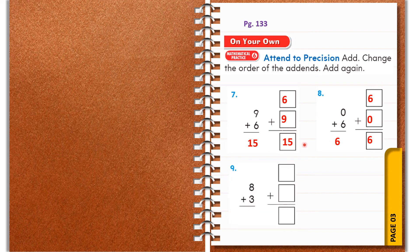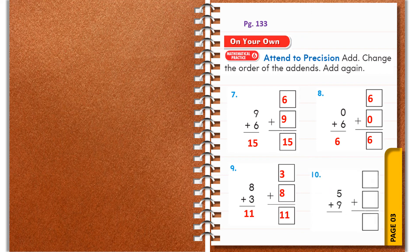Ninth question: eight plus three. Draw eight counters and add three more counters to it — the answer will be eleven. Now change the order: three plus eight will give you eleven again, the same sum.